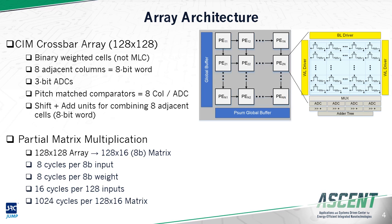At the bottom of each array, we have shift and add units to implement the rest of our matrix multiplication. In the following slides, we will see how this configuration allows us to perform a standalone 128 by 16 partial matrix multiplication in 1024 cycles.